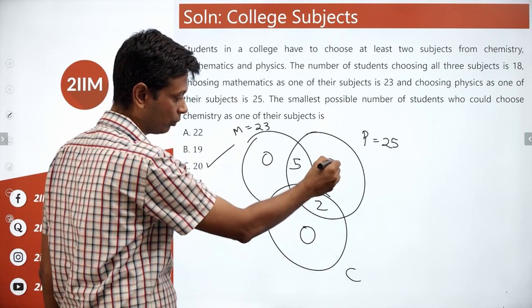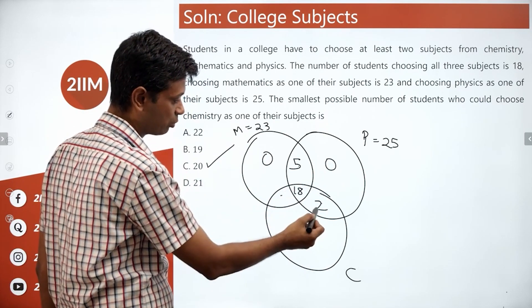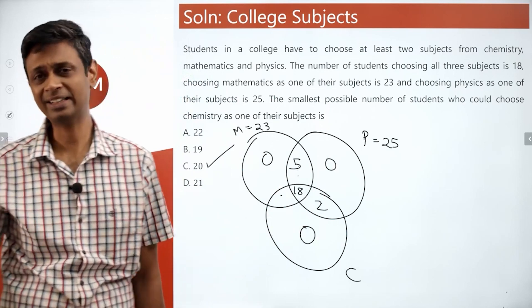Remember, this is 18, these three are zero. If this has to be as low as possible, this has to be as high as possible. The moment we crack that, you're through.